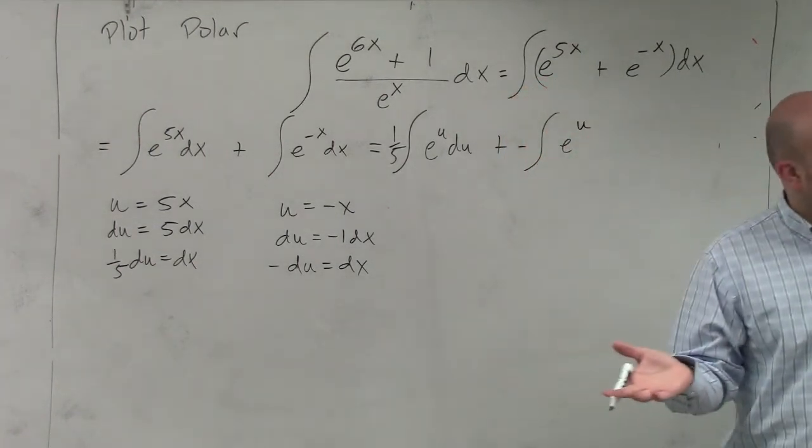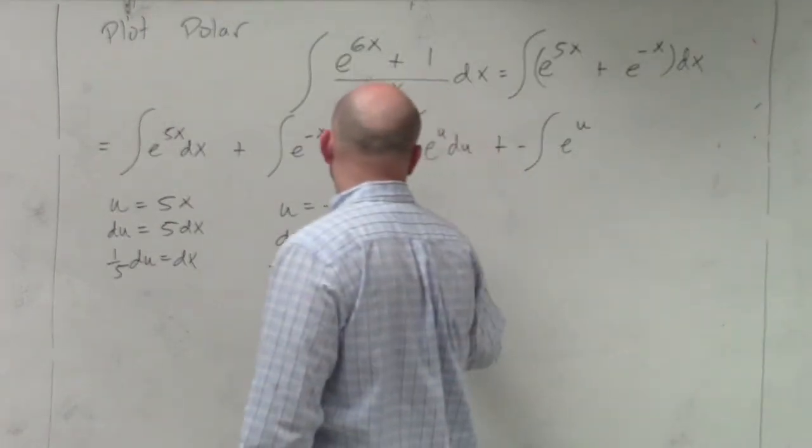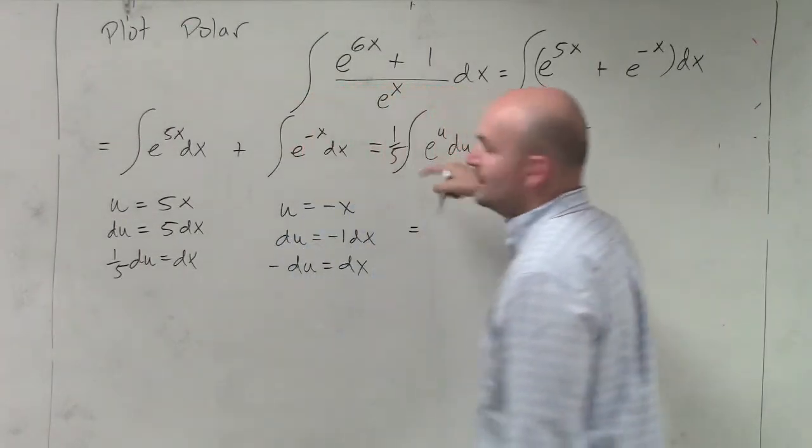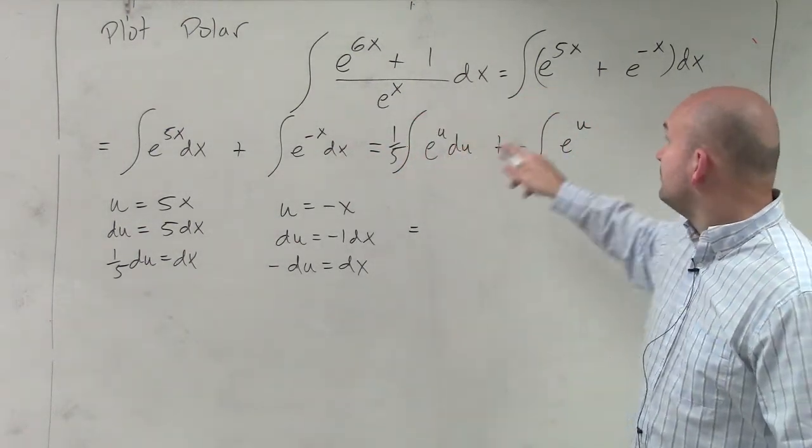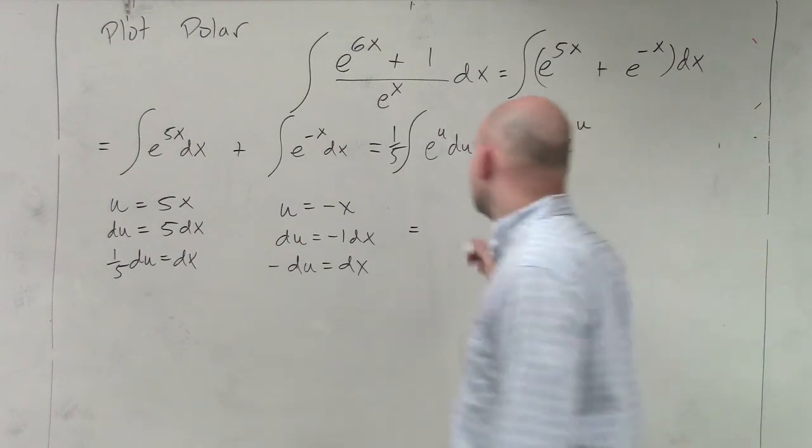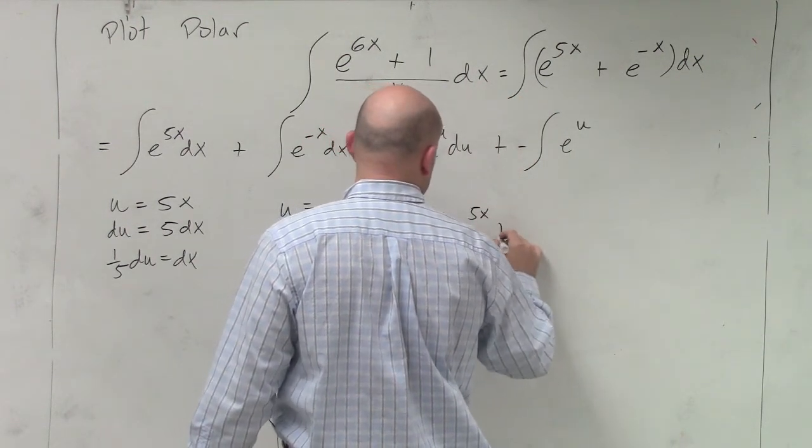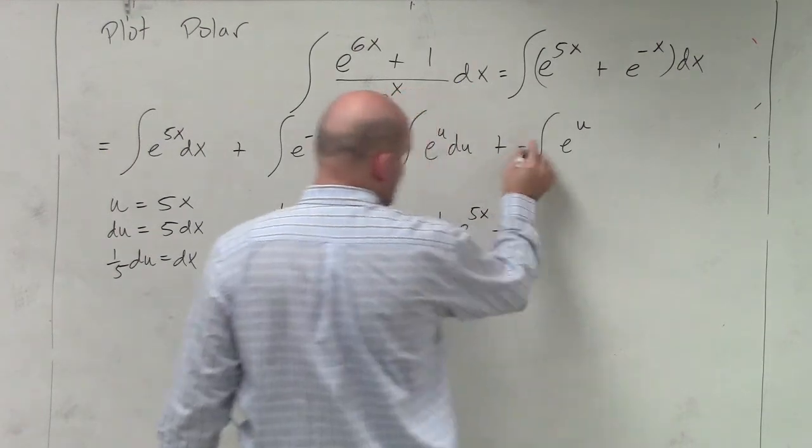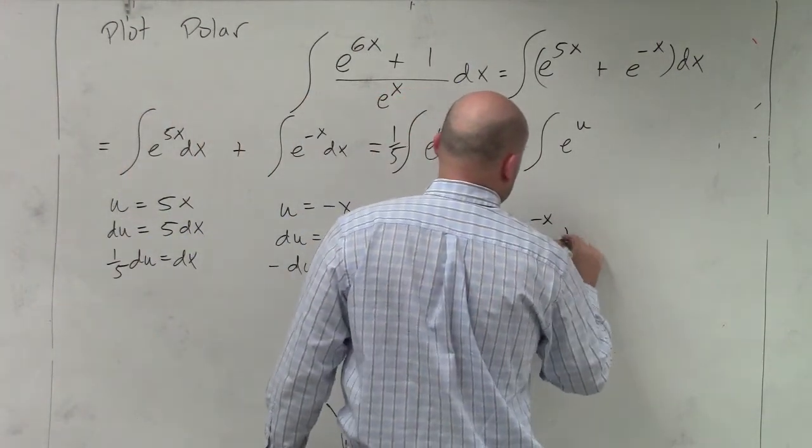And then integrating them is going to be pretty simple. I can just plug back in. Integrating e^u is obviously just e^u plus C. So therefore, I'm just going to plug back in my original u, which is 5x. So I have one-fifth e^(5x) minus, because it's plus a negative, minus e^(-x) plus C.